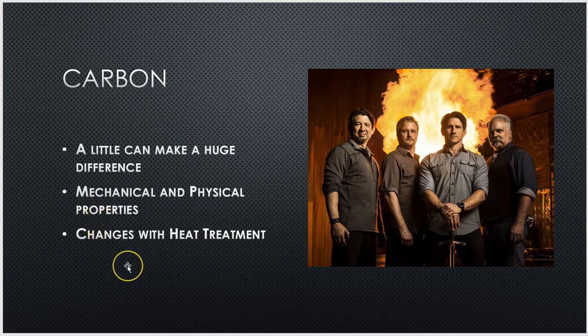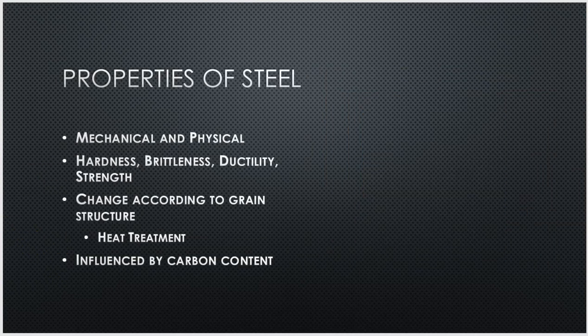Depending on the carbon content, you're also going to do something different with it as far as heat treating goes. Why do we talk about heat treating? Because as we heat treat steel, we're changing the properties of it — changing the physical and mechanical properties. The four things you should be thinking about are hardness, brittleness, ductility, and strength. These four things are going to change depending on how we heat the metal up, how fast we heat it up, how long it stays heated, and how fast or slow it cools down — in addition to how much carbon is in the steel. The properties of steel and heat treatment will be covered in additional presentations coming up soon.